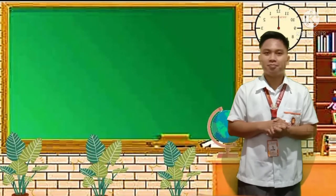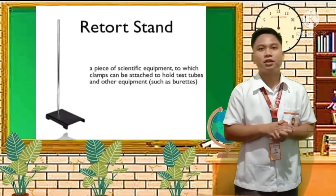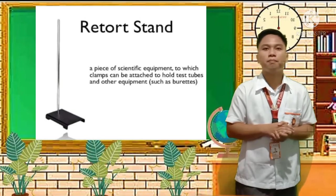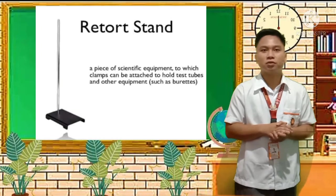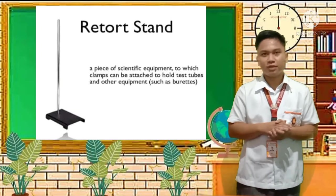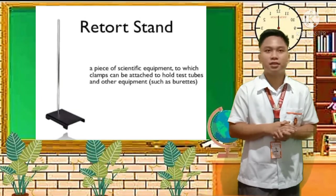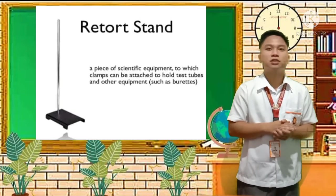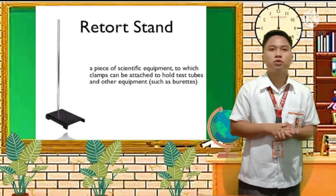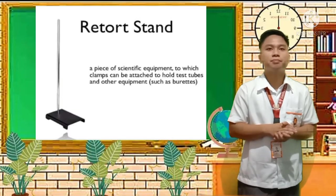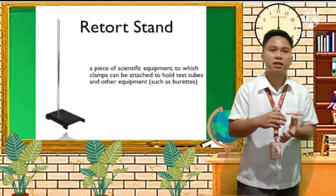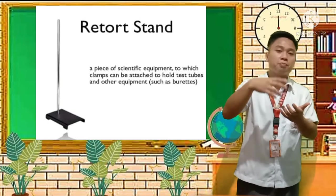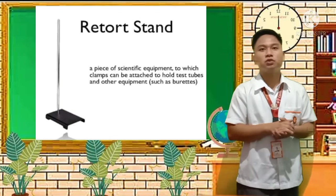Next we have the retort stand. As you can see in the picture on the left side, it is a piece of scientific equipment to which clamps can be attached to hold test tubes and other equipment. Test tubes and other instruments are clipped onto it for support. It keeps equipment secured and balanced during experimentation.